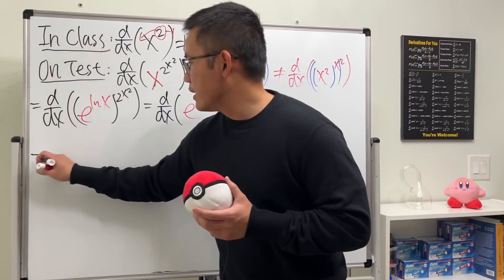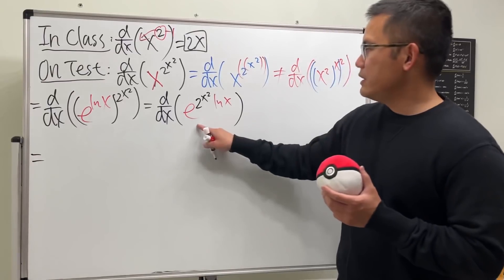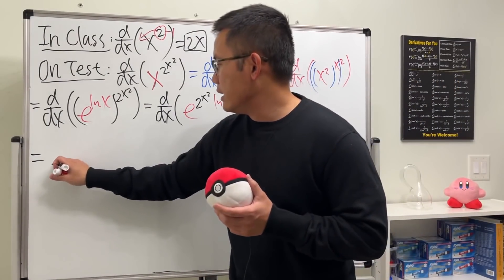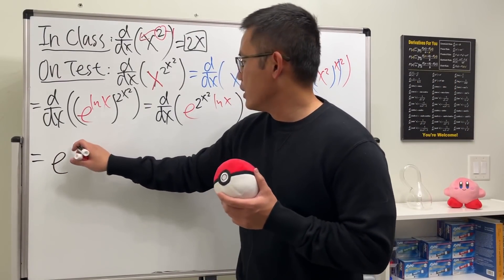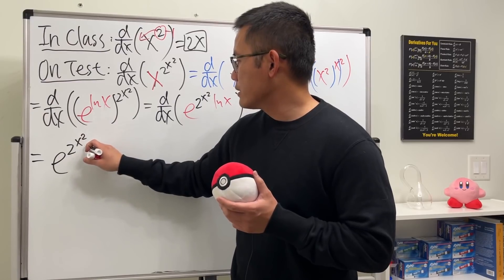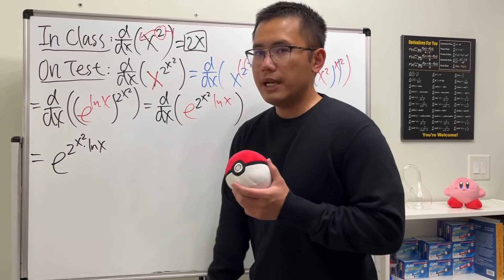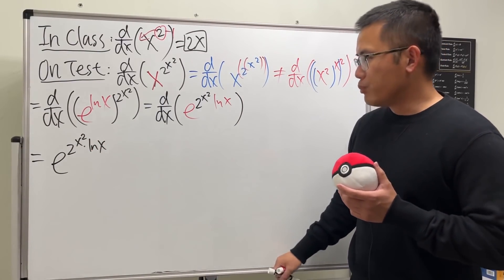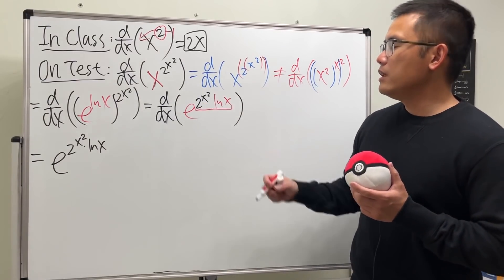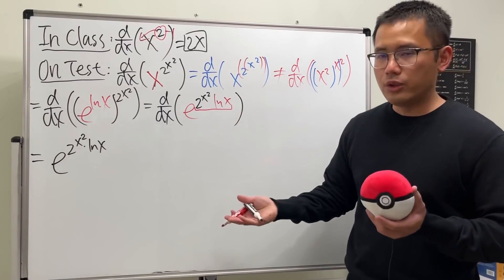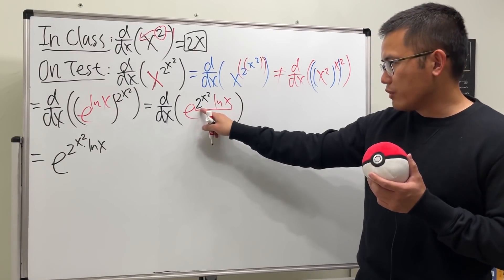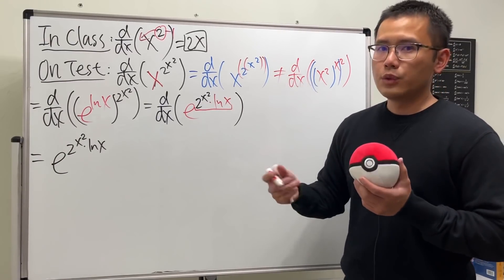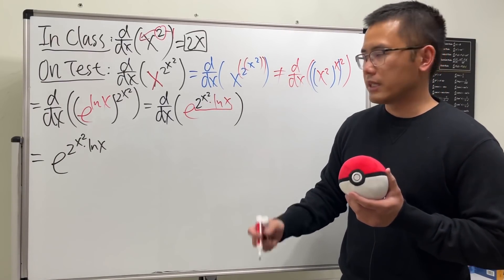Now let's take the derivative. Whenever we have e to something, the derivative is just e to the same thing. So we write down e^(2x² · ln x), and now the most important part of Calculus 1: we must use the chain rule, so we multiply by the derivative of the inside function. But the inside function is a product of two functions, so we also have to use the product rule.